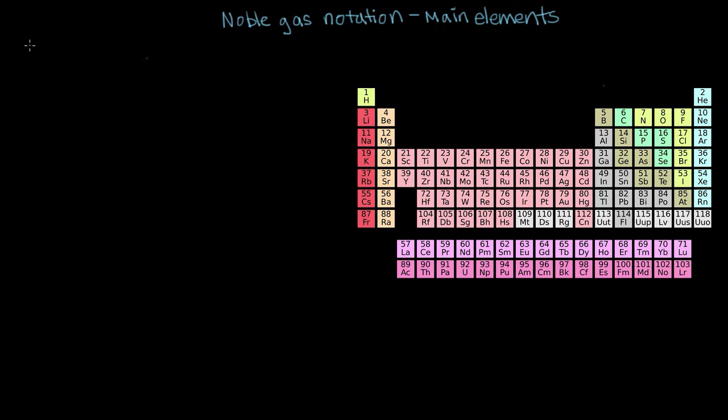So the rule for writing the noble gas notation for something is pretty simple. It is you take the noble gas immediately preceding your atom or ion. So what do I mean by immediately preceding? That means we want the noble gas that comes right before it. So you go up a row and then you go over to here where the noble gases live. And you put that in brackets and then you write your other electrons using the same notation that you normally write electron configurations in. If you don't remember what that is, we'll go through a couple examples right now.